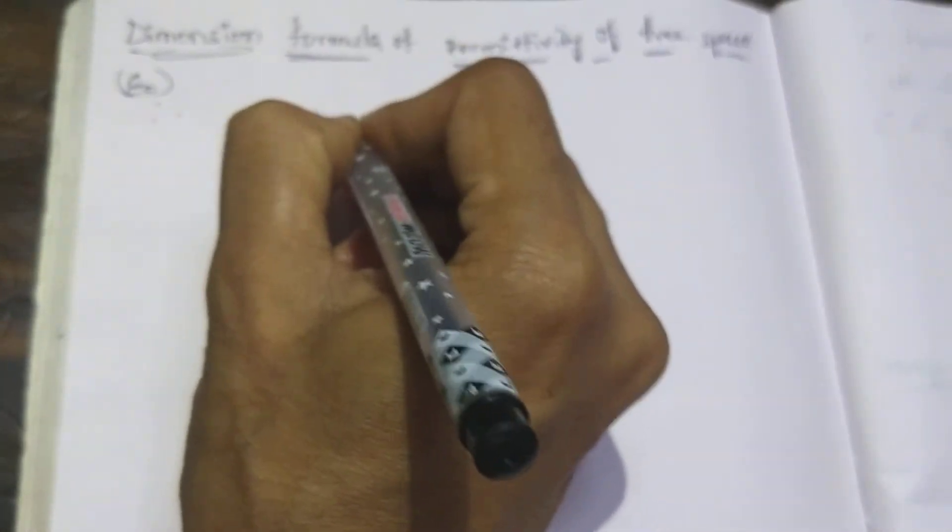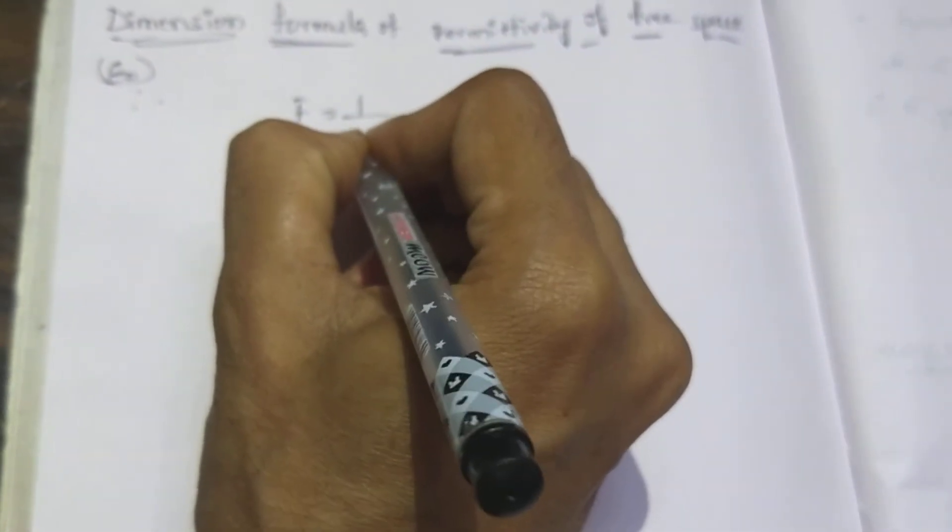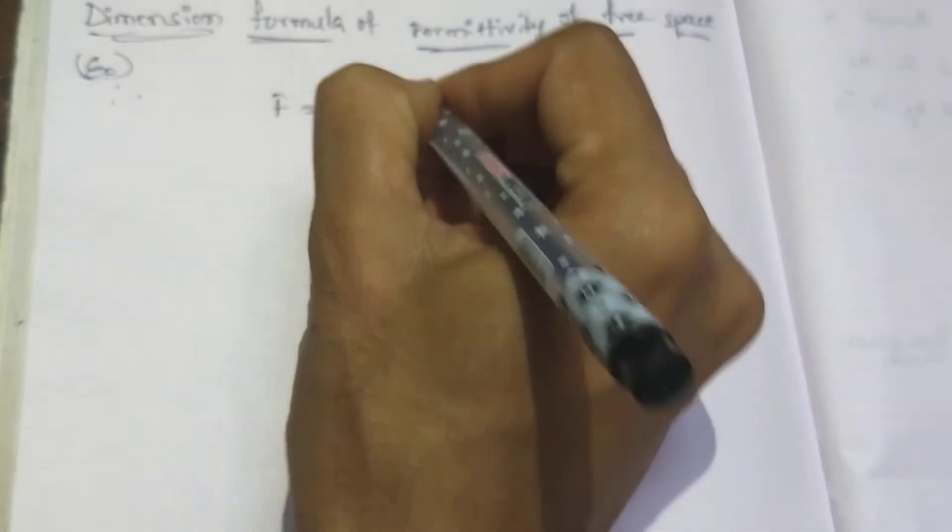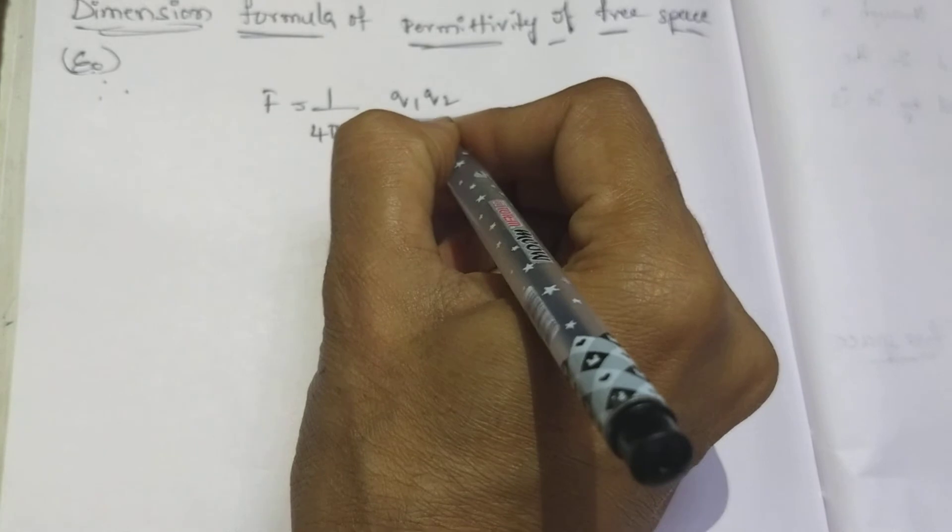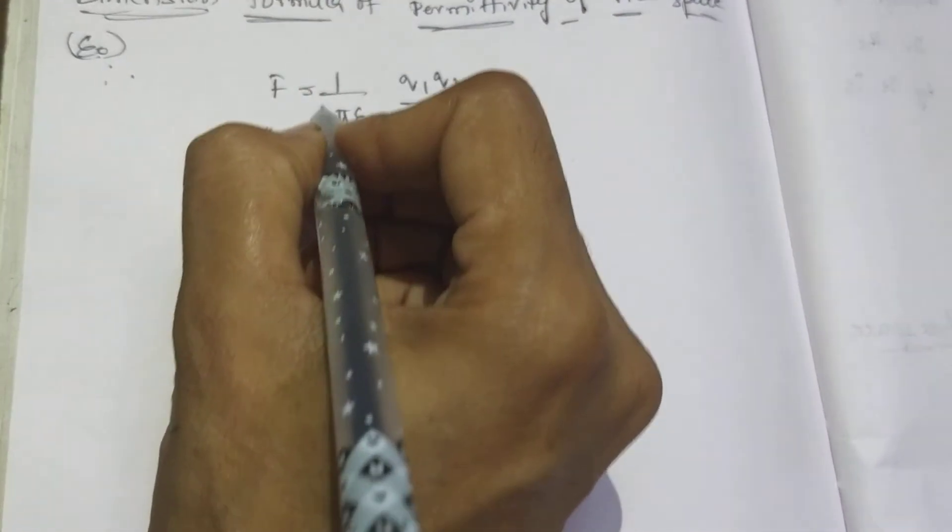From Coulomb's inverse square law, F equals 1 by 4 pi epsilon naught into Q1, Q2 divided by R square or D square.